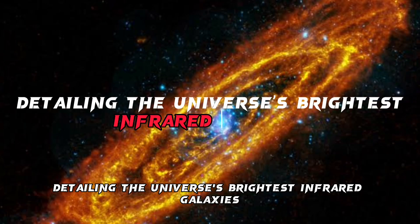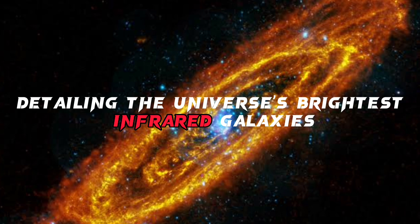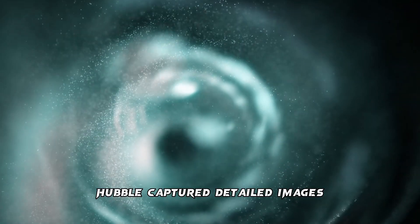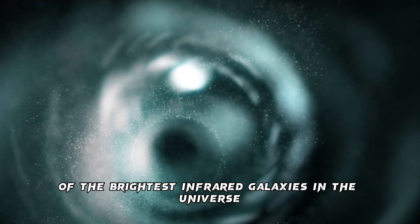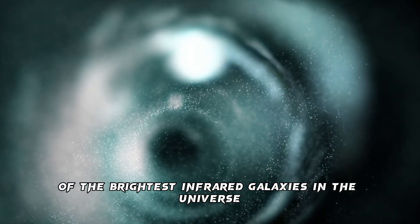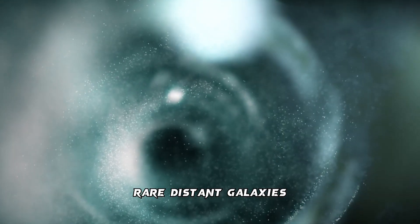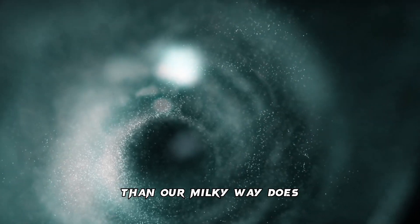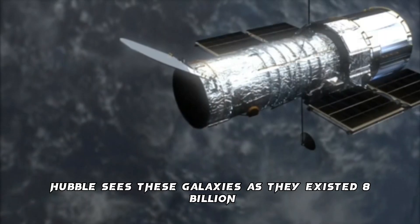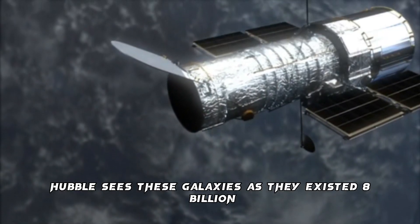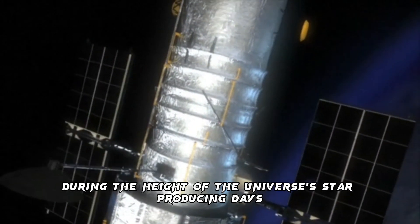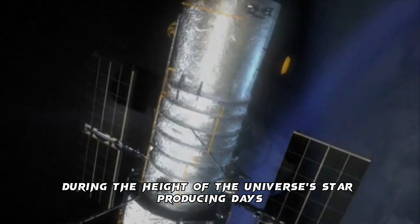Detailing the universe's brightest infrared galaxies. Assisted by gravitational lensing, Hubble captured detailed images of the brightest infrared galaxies in the universe, rare distant galaxies that give off 10,000 times more infrared light than our Milky Way does. Hubble sees these galaxies as they existed 8 billion to 11.5 billion years ago, during the height of the universe's star-producing days.